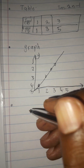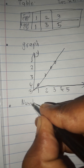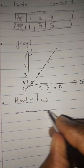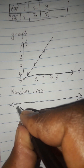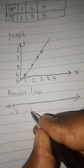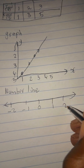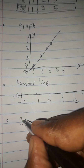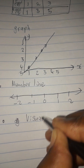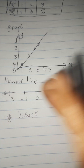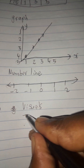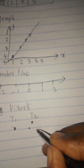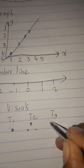The fourth one will be the number line. You may be asked to represent the pattern on a number line. For example: negative 2, negative 1, 0, 1, 2 — that is a number line. The fifth one will be visuals. We can represent the pattern visually, for example: term 1 has 1 dot, term 2 has 3 dots, and term 3 has 5 dots.